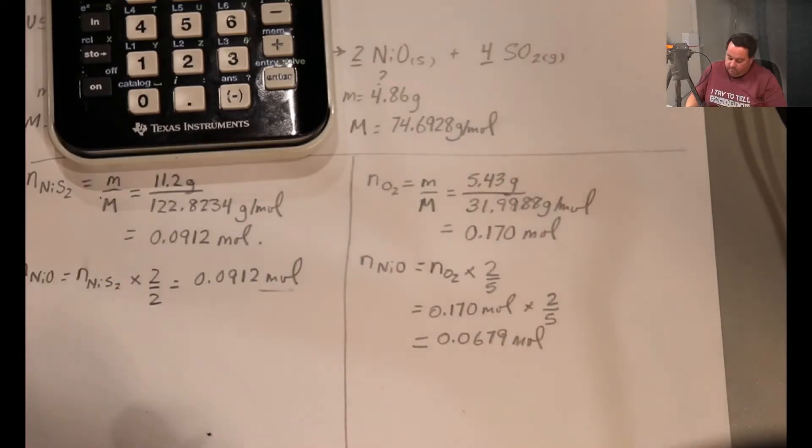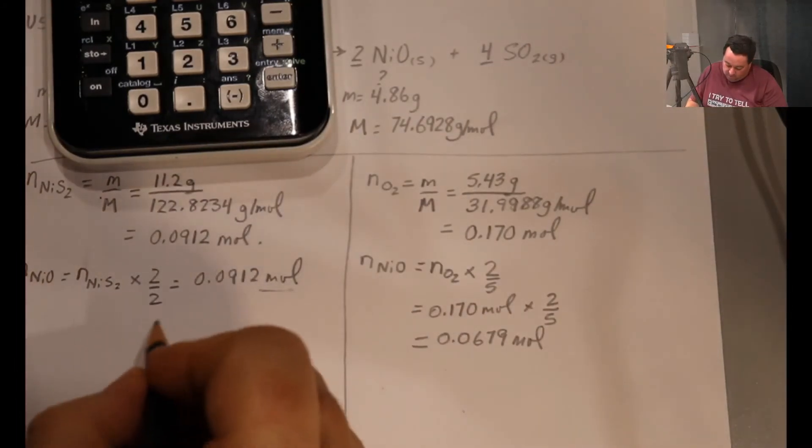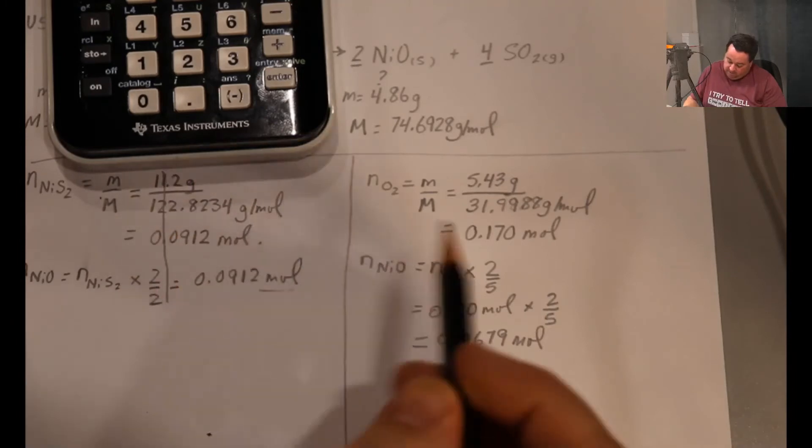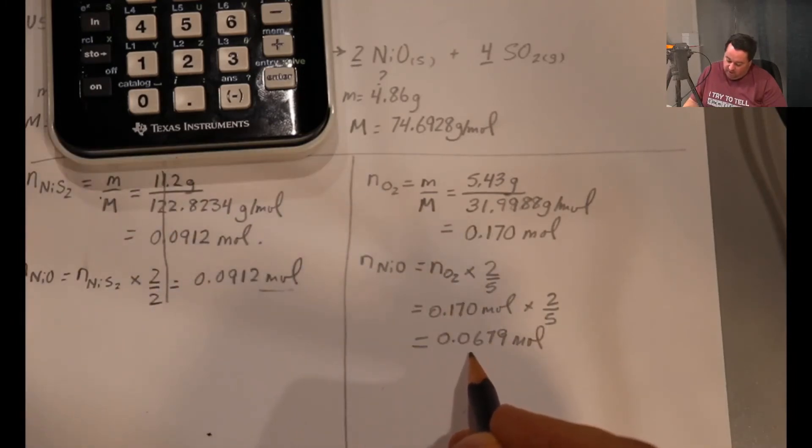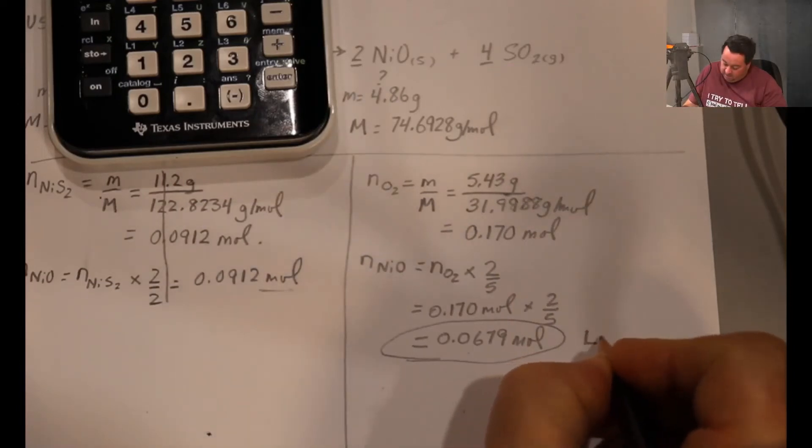So what we've done here is just saved ourselves a bit of work. We did not need to work this one through to the end because, as you can see, there are fewer moles of NiO predicted from the second reactant. So this is the one that we're going to run out of first and it will stop the reaction. This is our limiting reagent.